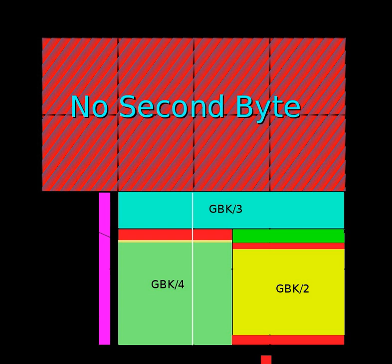GLIBC's GCONV, the character codec library used on most Linux distributions, supports GB18030-2000 since version 2.2, and GB18030-2005 since version 2.14. GLIBC notably includes non-PUA mappings for GB18030-2005 in order to achieve round-trip conversion. Libiconv, an alternative ICONV implementation frequently used on non-GLIBC Unix-like environments like Cygwin, supports GB18030 since version 1.4.